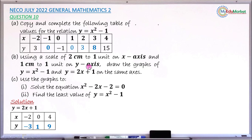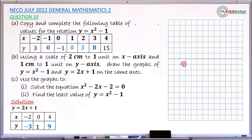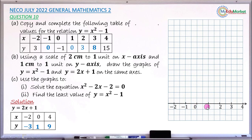Now let's draw the graphs. We bring our graph sheet paper and draw the x-axis, numbering it according to the given scale. On the x-axis the scale is 2 cm to 1 unit, so from 0 to 1 is 2 cm, 1 to 2 is 2 cm, 2 to 3 is 2 cm, and 3 to 4 is 2 cm. Do the same for the negative part of the x-axis.